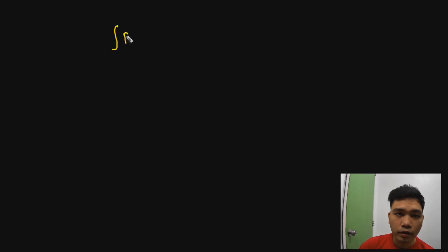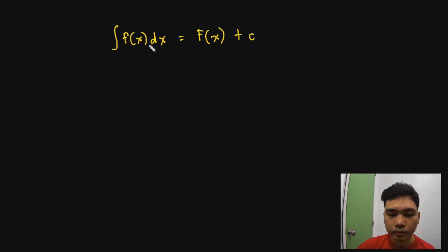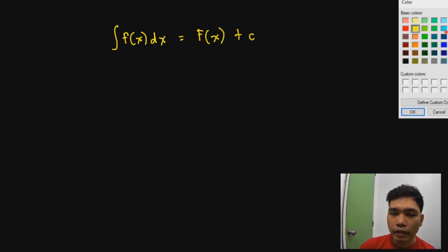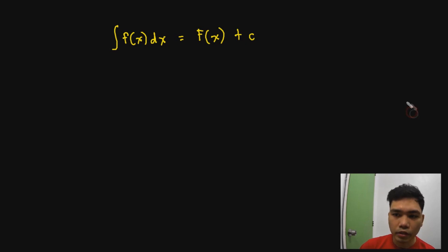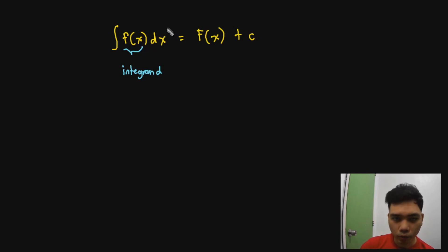Let's discuss some of the parts of our integral expression. If we have the integral of f of x dx, this is equal to the antiderivative represented as capital F of x, plus some constant of integration. Now, this f of x is what we call the integrand — the function whose antiderivative we want to find. And this dx, or simply the x part, is what we call the variable of integration.